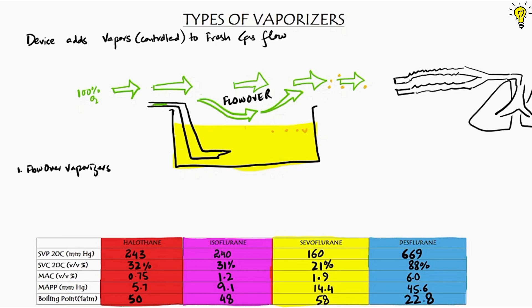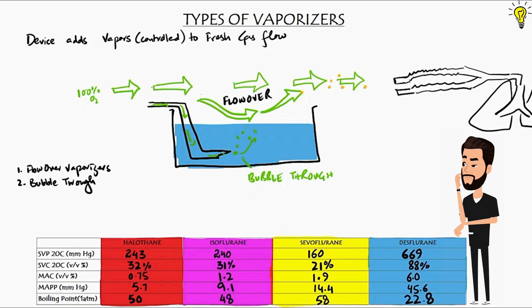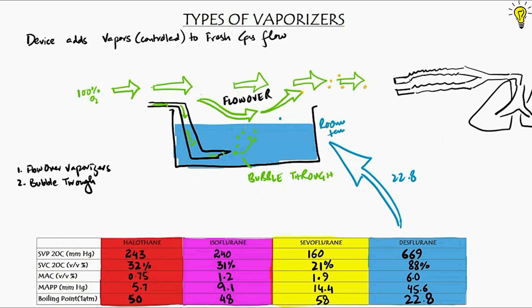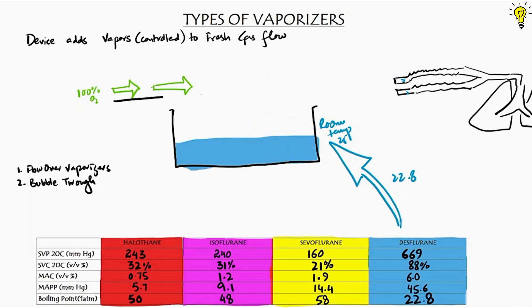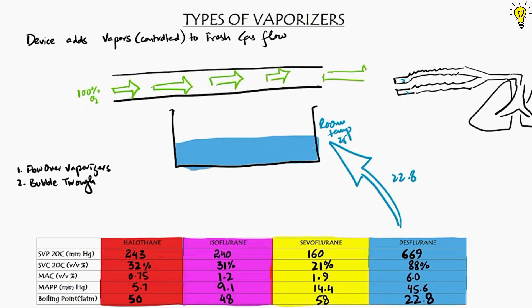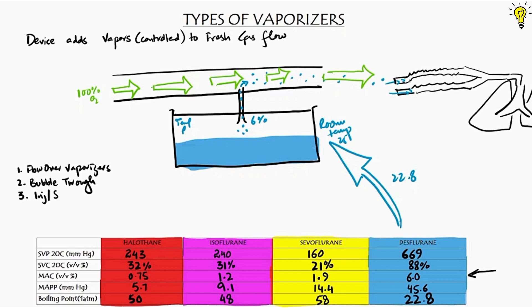Another way to vaporize liquid is via the bubble-through method. But in the case of blue color-coded desflurane, its boiling point is 22.8°C, so it practically boils at room temperature. That means if exposed in flow-over style vaporizers, the saturated vapor pressure would be 100% of 760 mmHg — meaning an overdose going to the patient circuit. So desflurane is contained in a special injection-type vaporizer where fresh gas flows in a separate line and a fixed concentration of desflurane is sprayed into the gas mixture. A fourth kind, the measured flow vaporizer (e.g., halothane copper kettle type), is now obsolete.